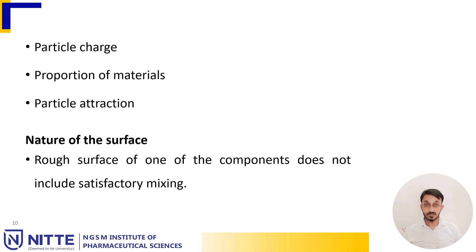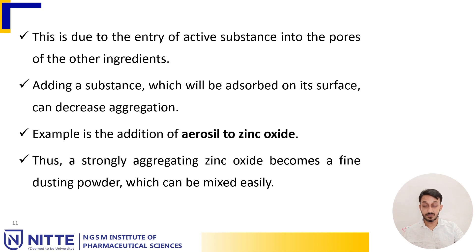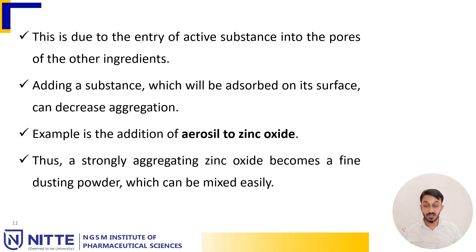Regarding the nature of surface: a rough surface of one of the components does not allow satisfactory mixing. A rough surface can often disrupt the mixing process due to the entry of active substance into the pores of the other ingredients. Adding a substance that can absorb on its surface can decrease the aggregation. For example, the addition of Aerosil to zinc oxide causes the strongly aggregating zinc oxide to become a fine dusting powder which can be mixed easily.